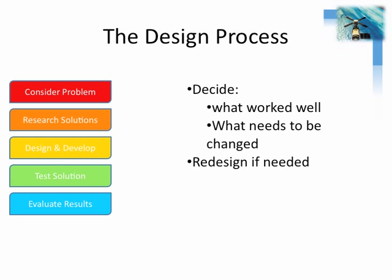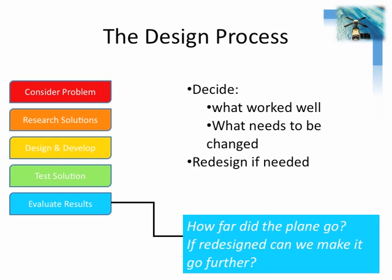Evaluating results is where you decide: did it work well, or does it need to be changed? If it worked well, you're done — the design process has produced the result you wanted. But often things don't work exactly how we want, especially the first time. So you decide what needs to be changed and then redesign if needed. For the paper airplane, you ask: how far did it go, and if redesigned, can we make it go further? If the answer is yes, you go through the process again.